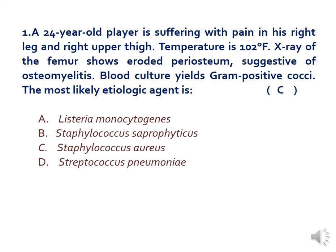A 34-year-old player is suffering with pain in his right leg and right upper thigh. The temperature is 1 to 2 degrees above normal. X-ray of the femur shows eroded periosteum suggestive of osteomyelitis. Blood culture yields gram-positive cocci. The most likely etiological agent is C — Staphylococcus aureus. We need to sort out why the other three options are not the answer.